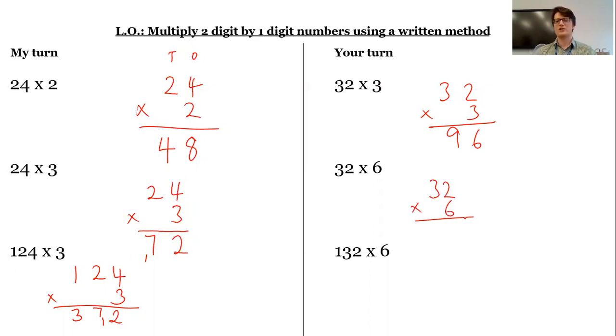What about 32 times 6? Well, 6 times 2 is 12. So remember that 12, we've got our 10s and our 1s. So the 1s stay in the 1s column. The 10 gets regrouped into that 10s column. 6 times 3 is 18.